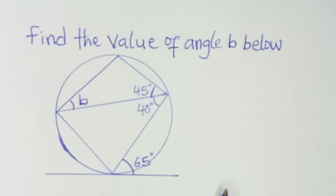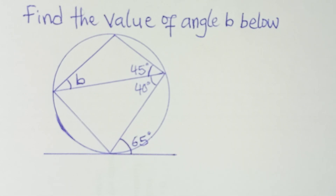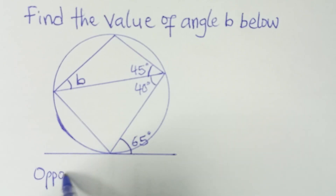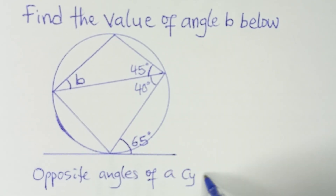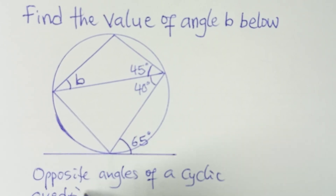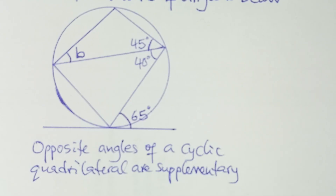Now the first theorem — I'm going to write the two theorems down. The first theorem is that opposite angles of a cyclic quadrilateral are supplementary. This is the first theorem that we are going to be applying.